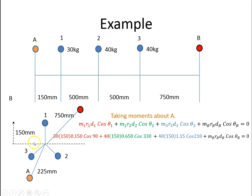And the angle measured from the horizontal is 330 degrees. We do the similar with 3, which is 40 at a radius of 150, and the distance is 1.15 meters. So 150mm plus 500 plus 500. And the angle measured from the horizontal is 210. The final moment is this balanced mass over here, which we don't know. So I've just put it MbRbdB cosine θB.